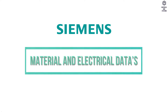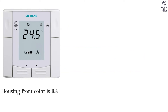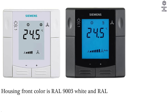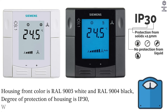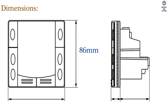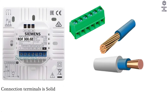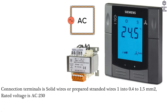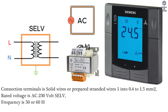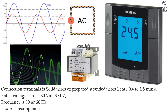Material and electrical data: Housing front color is RAL 9003 white and RAL 9004 black. Degree of protection of housing is IP30. Weight is 0.220 kg. Dimensions: height 86 mm, width 86 mm, depth 60 mm. Connection terminals accept solid wires or prepared stranded wires, 1 × 0.4 to 1.5 sq mm. Rated voltage is AC 230V SELV. Frequency is 50 or 60 Hz. Power consumption is maximum 8 VA.